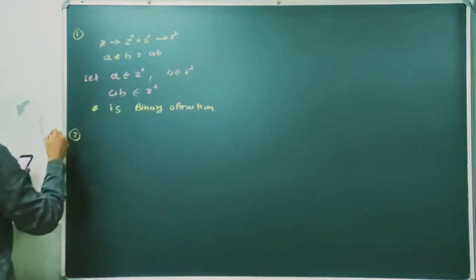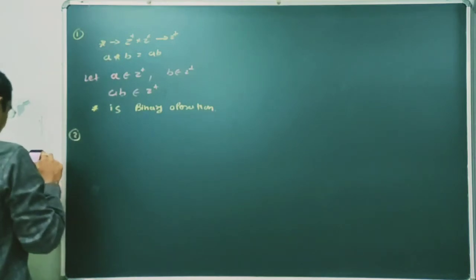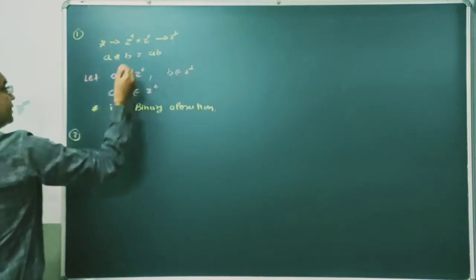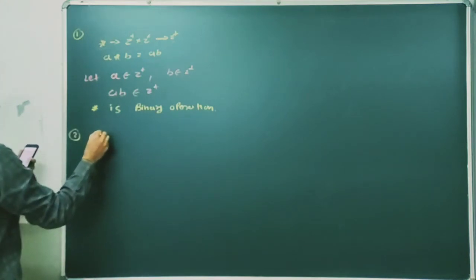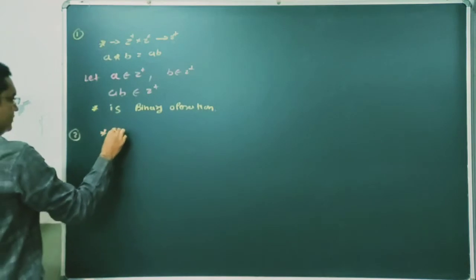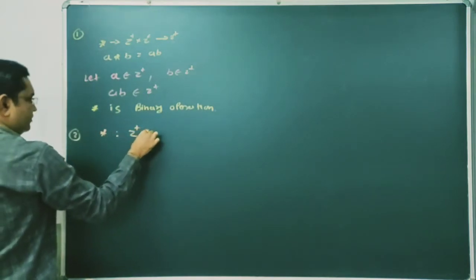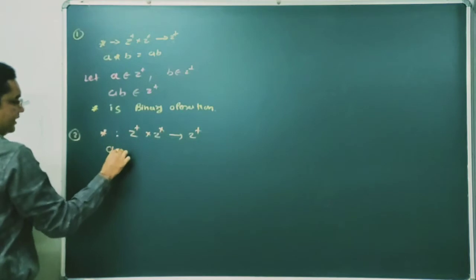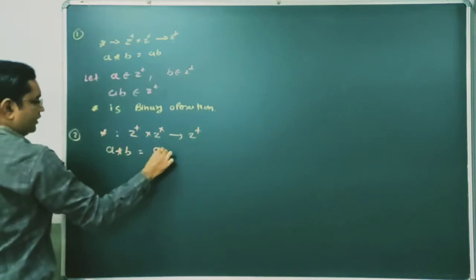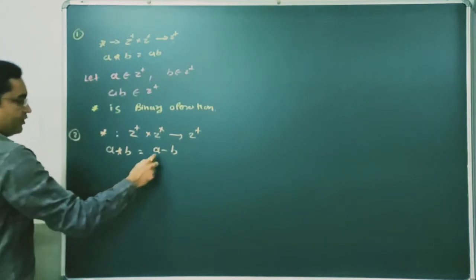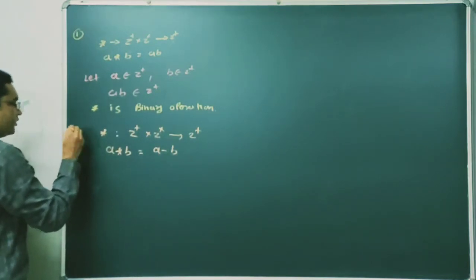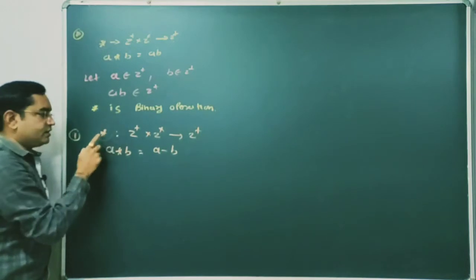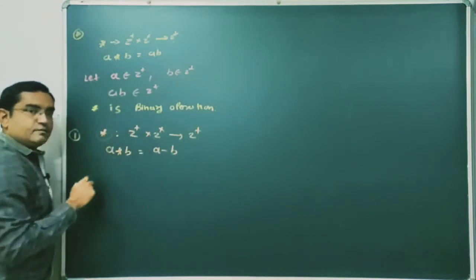Second part: we are given a binary operation star from Z+ × Z+ → Z+. This binary operation star is defined as a★b = a − b. We have to check whether this binary operation star is a binary operation or not.